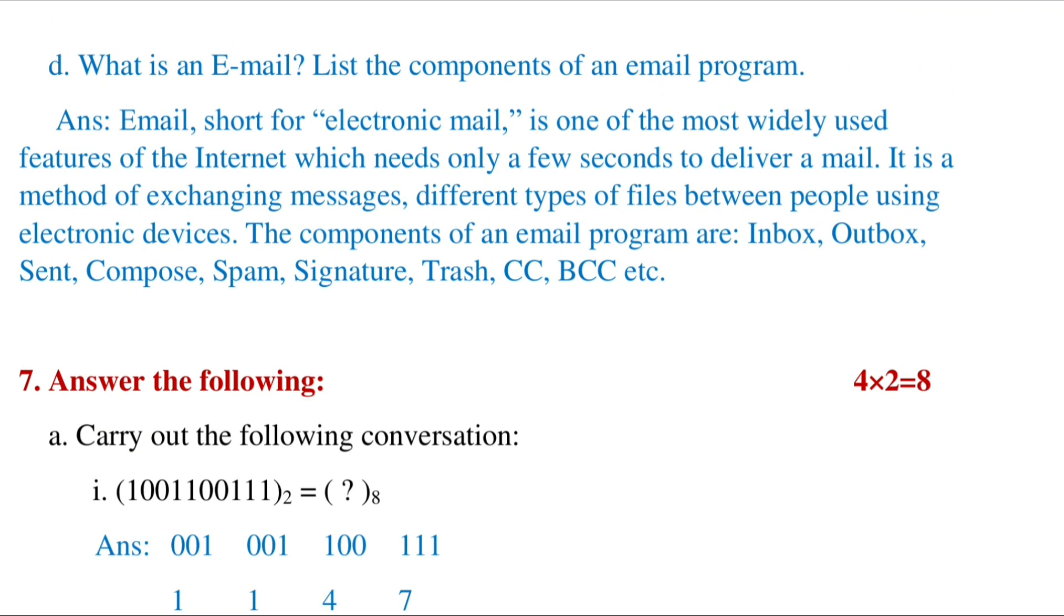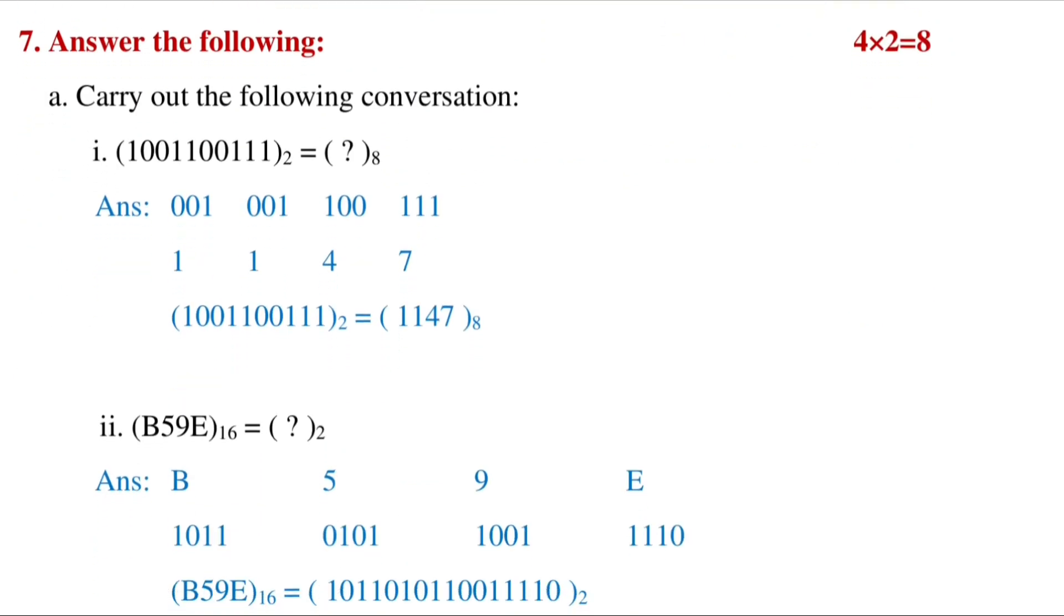What is an email? List the components. An email is an electronic mail which we can send from one computer to another with the help of internet. The different components of an email program are inbox, outbox, compose, trash, spam, signature, etc.